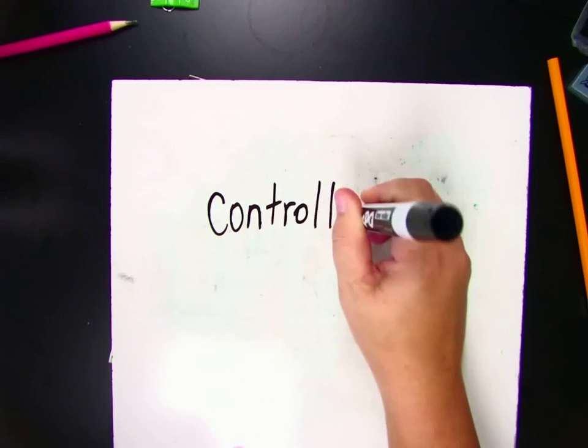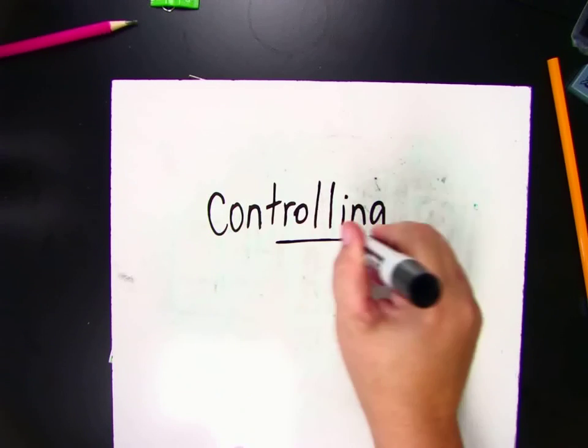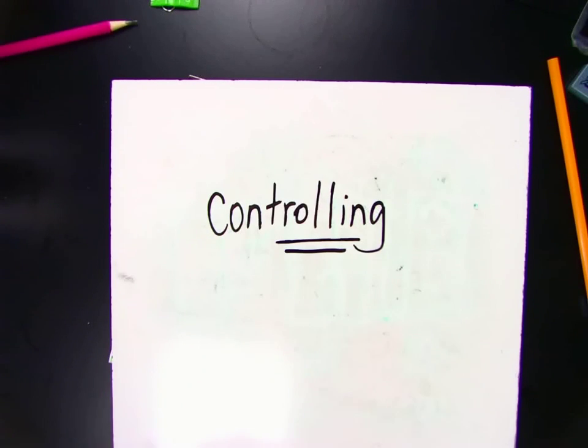When we are controlling something, that means that we're making sure that it does something. When you're in charge of something, you're controlling something.